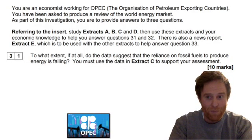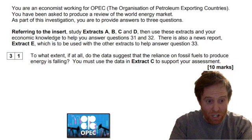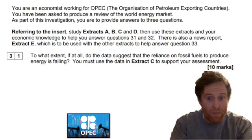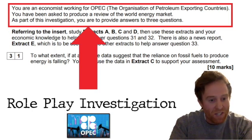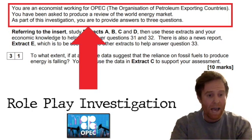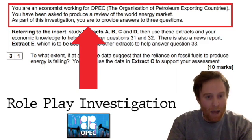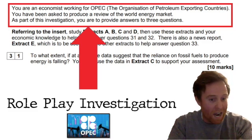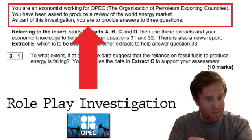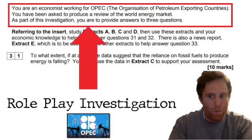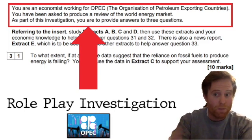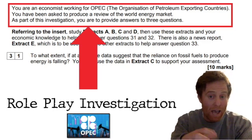So here's a question from — I think it's 2018 — and it says: 'You are an economist working for OPEC.' Paper 3 questions are almost like role-play investigations, so you need to look at what scenario or perspective you're adopting for all the questions in the last section. With this one, you are the economist working for OPEC, and you've been asked to produce a review of the world energy market. As part of the investigation, you are providing answers to these three questions.